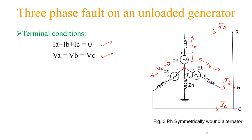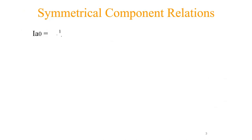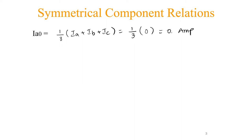Now using these two conditions we are going to find the symmetrical components of the system. The zero sequence current Ia0 is equal to one-third of (Ia plus Ib plus Ic). Since Ia plus Ib plus Ic equals zero, the zero sequence current will be equal to 0 amperes. For the positive sequence current, Ia1 equals one-third times (Ia plus A·Ib plus A²·Ic).